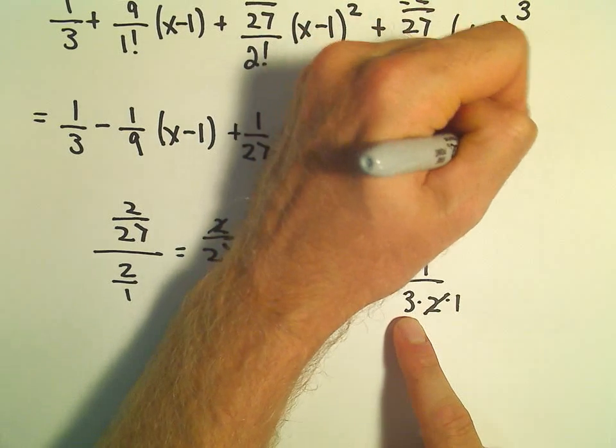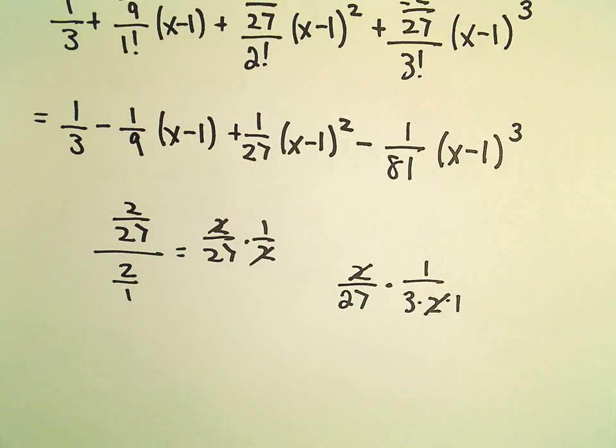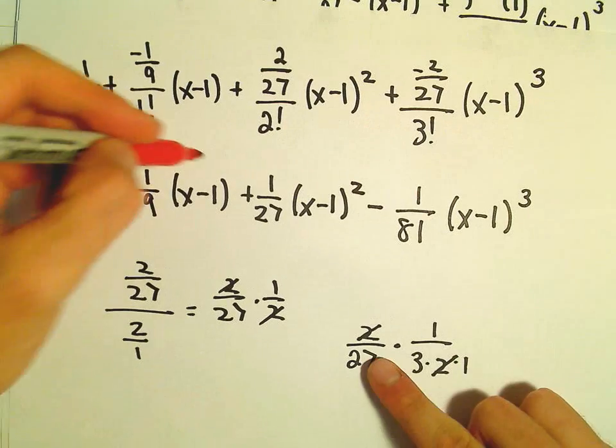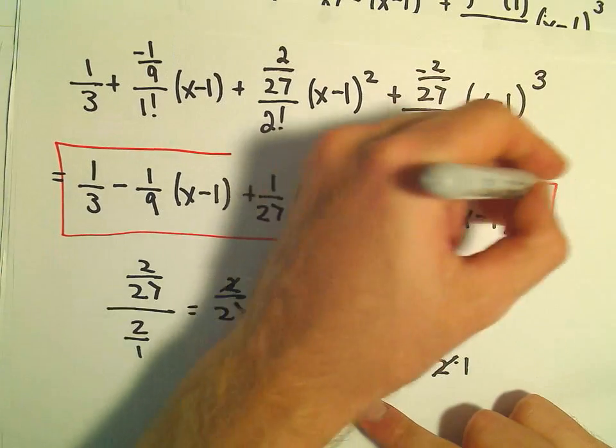Times x minus 1 to the 3rd power. And now we have our degree 3 approximation.